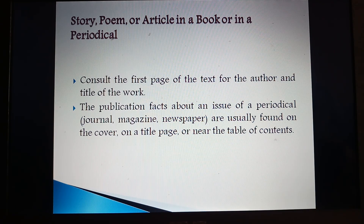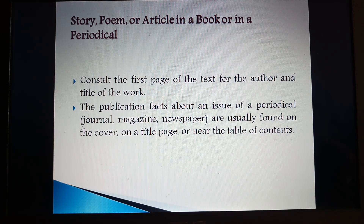And then we have a story, poem, or article in a book or in a periodical. Consider the first page of the text for the author and title. The publication facts about an issue of a periodical — journal, magazine, newspaper — are usually found on the cover, on a title page, or near the table of contents. As we see here, this is the name of the journal and the facts related to the publication about the issue are mentioned here. This is the name of the author and this is the title of the article. This may vary to the demand of the journal, because sometimes different journals ask the writers or researchers to mention the details in different ways.